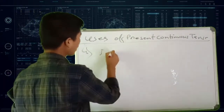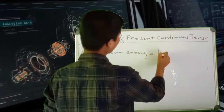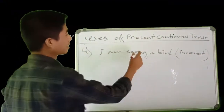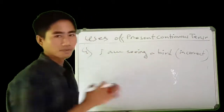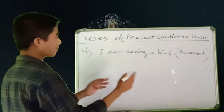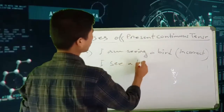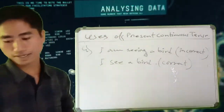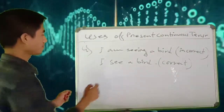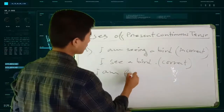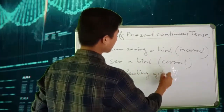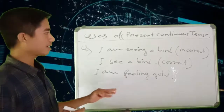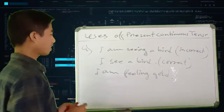I am seen a bird — so this is incorrect. The correct form uses stative verbs differently. For example: I am feeling good. The way to say it is: I am feeling good.